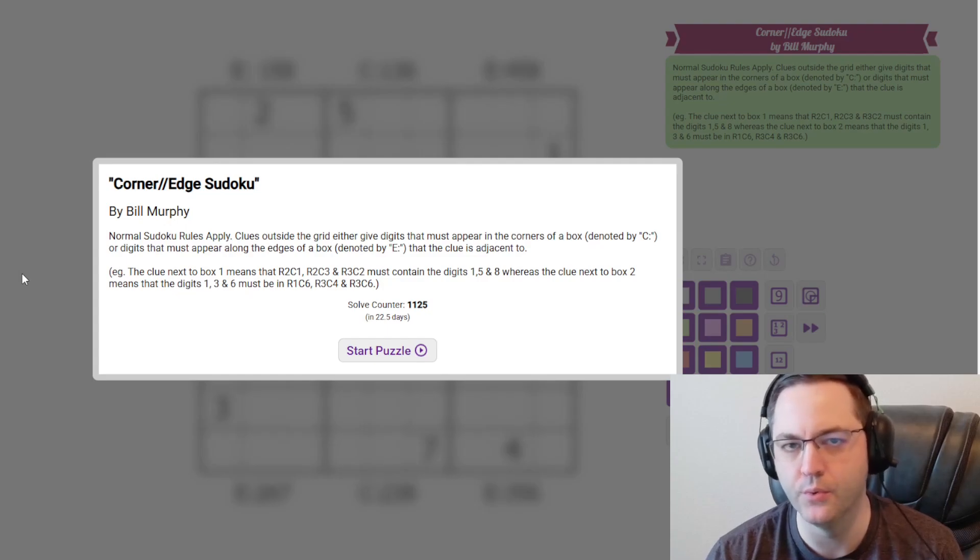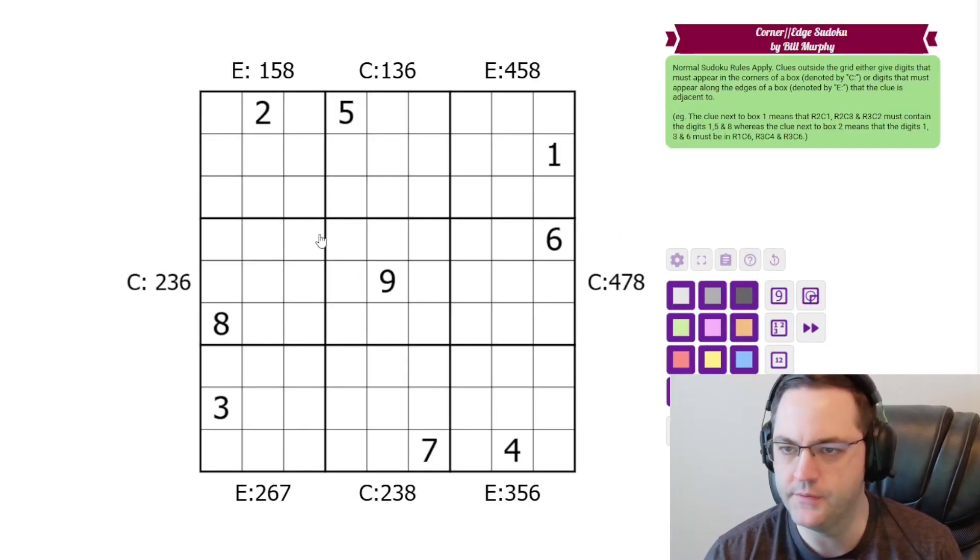Hi everyone, this is the Gas Walk 3 for September 30th. I'm Philip Newman. Today I'm solving Corner Edge Sudoku by Bill Murphy. We've done this variant before, but we have normal Sudoku rules: 1 to 9 in each row, column, and 3 by 3 box.